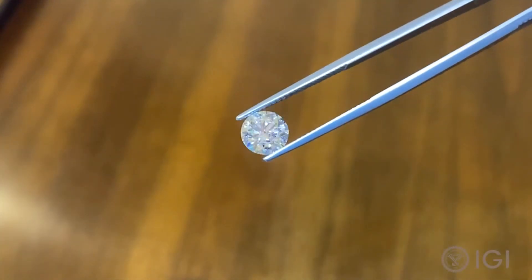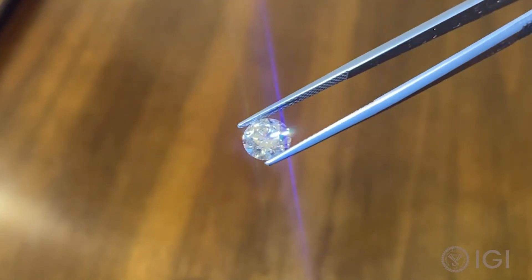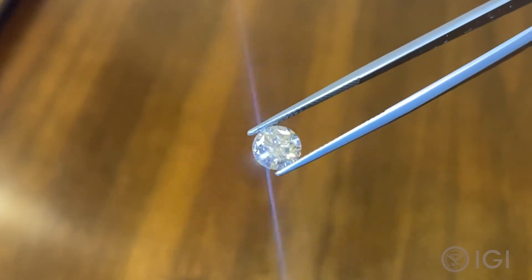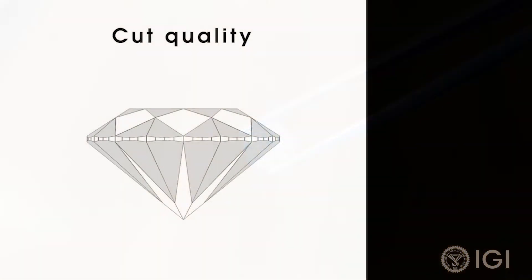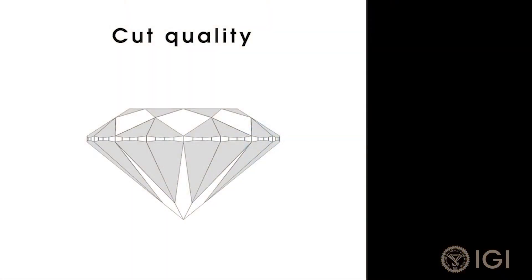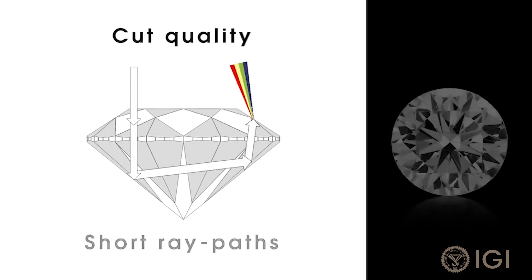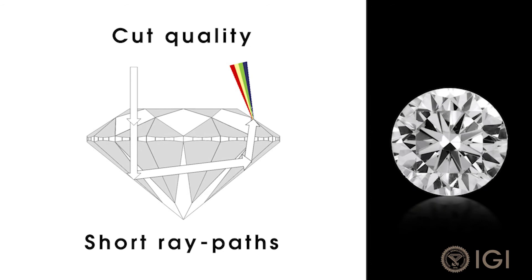Viewing a diamond from the top is not neutral because the way a diamond is cut can influence color appearance. In well-cut diamonds, light gets in and out on shorter ray paths with greater intensity. This can cause the appearance of less color when the diamond is seen from the top.